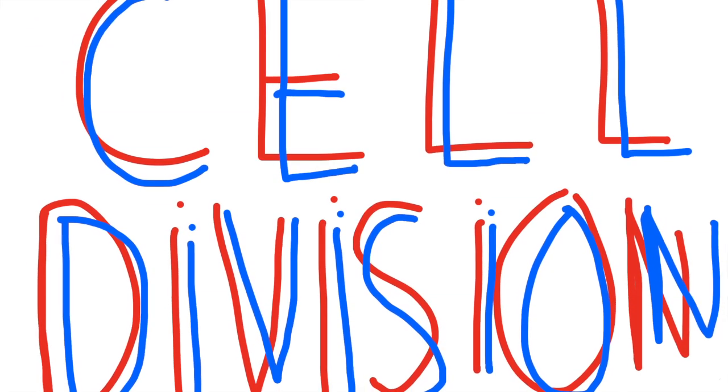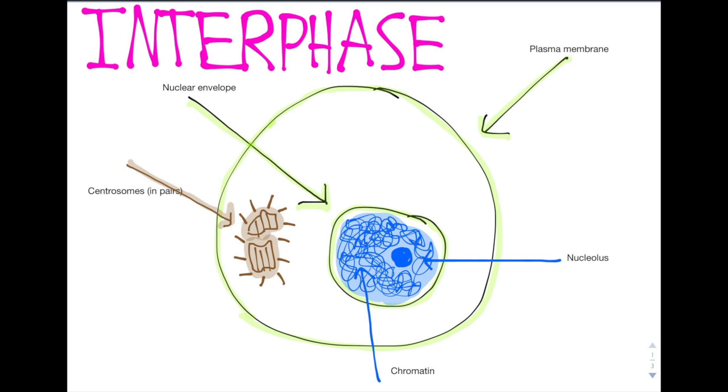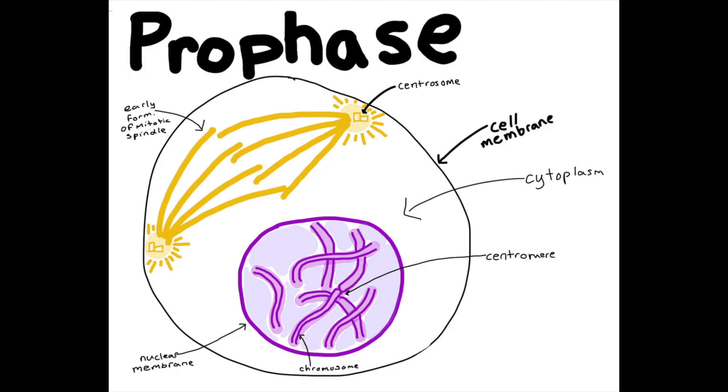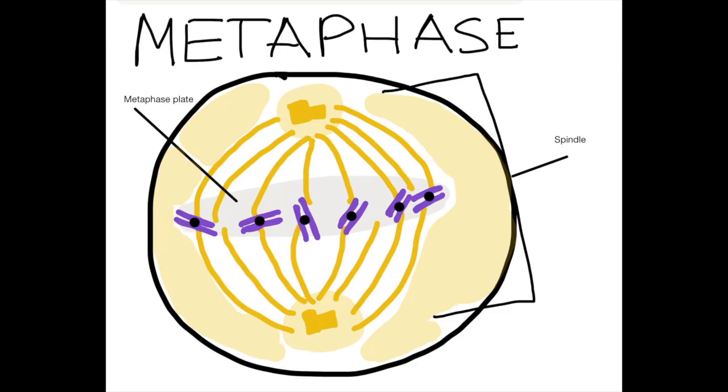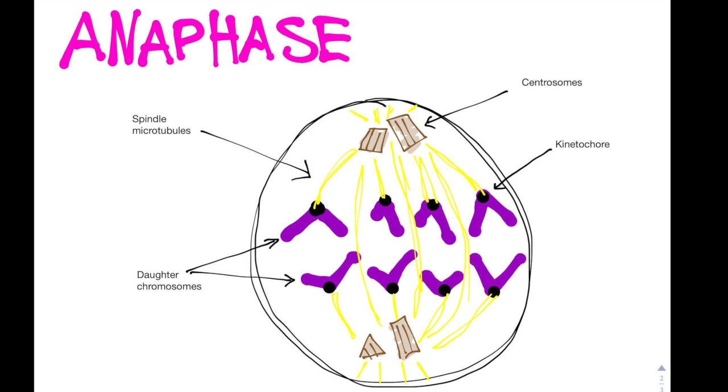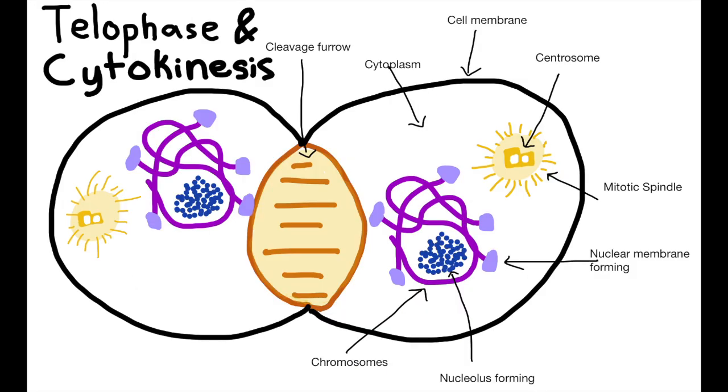To recap, there's interphase, then prophase, then prometaphase, then metaphase, anaphase, telophase, and last but not least, cytokinesis.